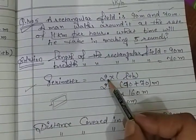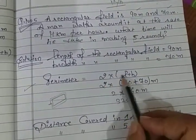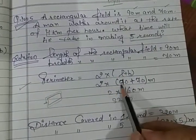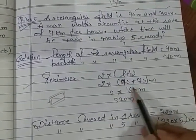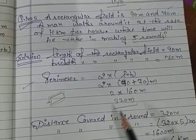For finding the perimeter we will simply apply the formula: 2 multiplied by length plus breadth. Simply putting the values, 90 plus 70 multiplied by 2, and you will get 320 meters.